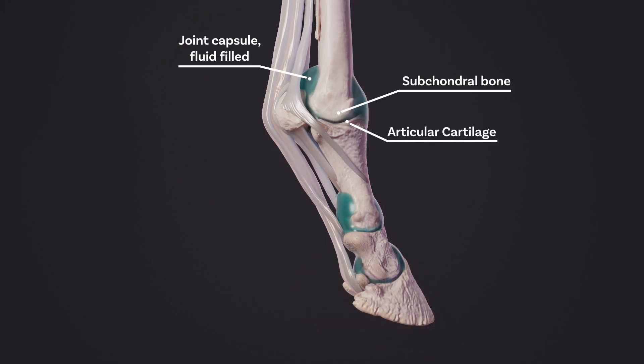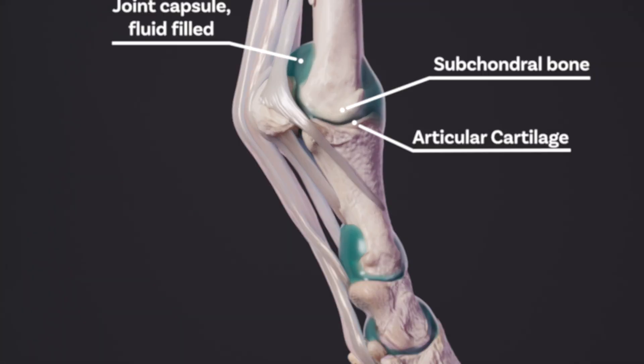Synovial joints are comprised of a joint capsule, articular cartilage, subchondral bone, synovial tissue, joint cavity, and synovial fluid.